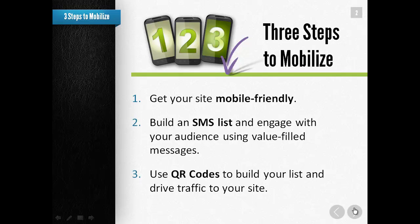What are the three steps to mobilizing? The first one is to get your WordPress site mobile friendly — making sure your site is accessible by mobile devices. The second step is to build an SMS, a text message list, and engage with your audience using value-filled messages. This is completely permission based — I don't want to do anything that's not above board. This is about building an SMS list with permission.